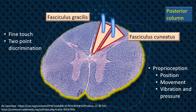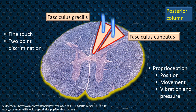fine touch, two-point discrimination (that is, discriminative touch), proprioception — meaning the body's sense of position, identifying what joint is moved to what level — as well as movements, vibration, and deep pressure. These are the inputs carried in this column.